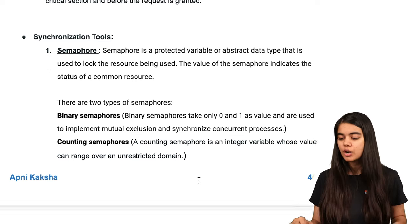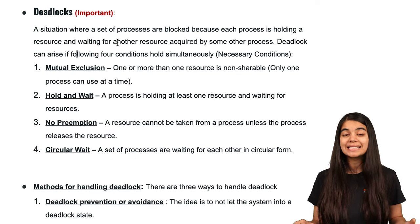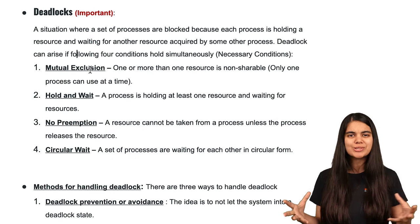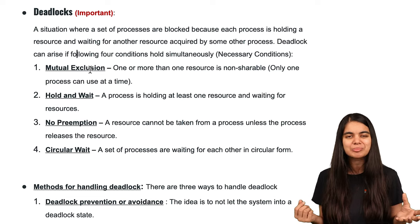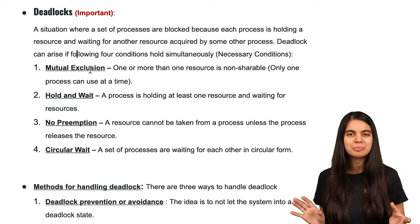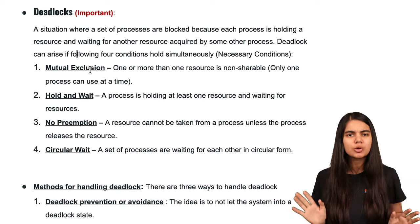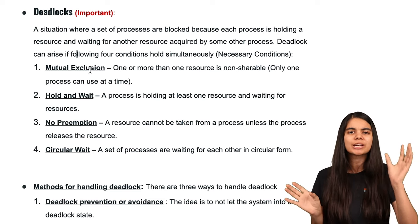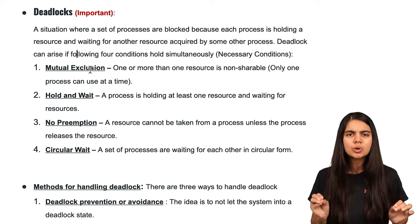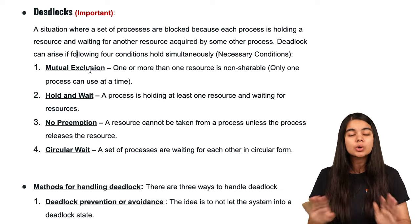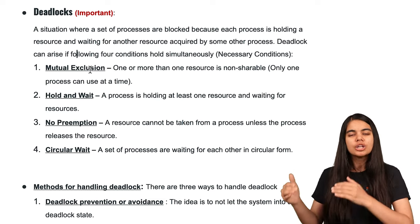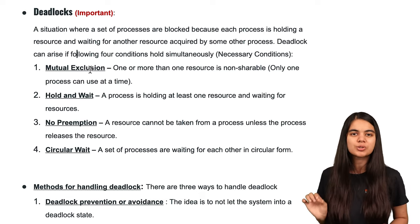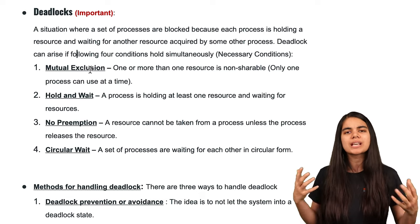What are deadlocks? Consider a situation: at home, brothers and sisters both want to drink mango shake from the fridge. One has to put the glass down, one has to pick it up. If both try at the same time, neither gets it and neither backs off. This type of situation, when it occurs in computer systems, is called a deadlock.